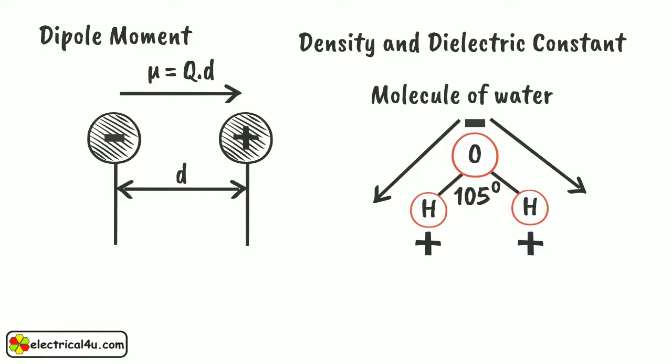There would be a resultant of these two dipole moments. This resultant dipole moment presents in each of the water molecule, even in the absence of any external applied field. So, the water molecule has a permanent dipole moment.